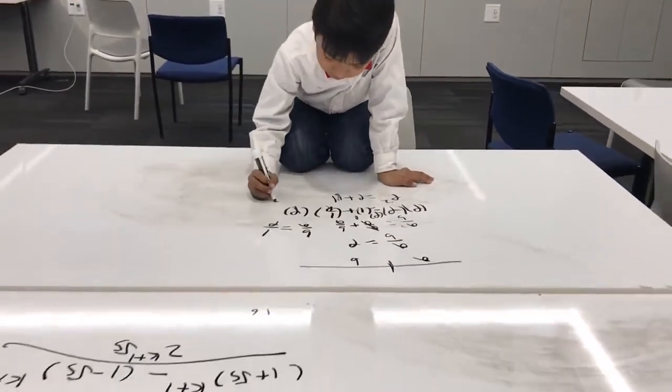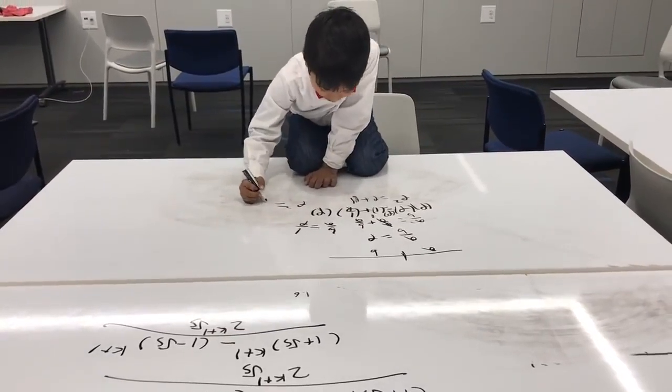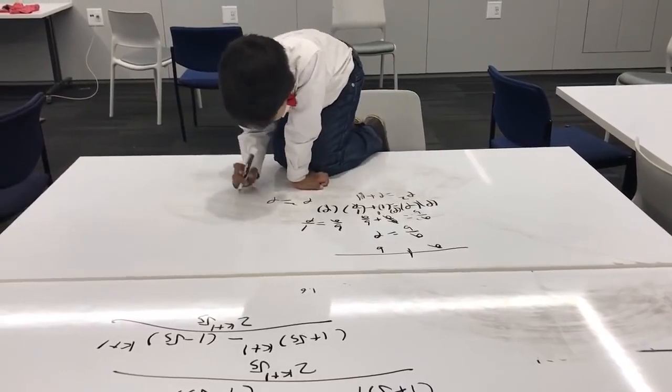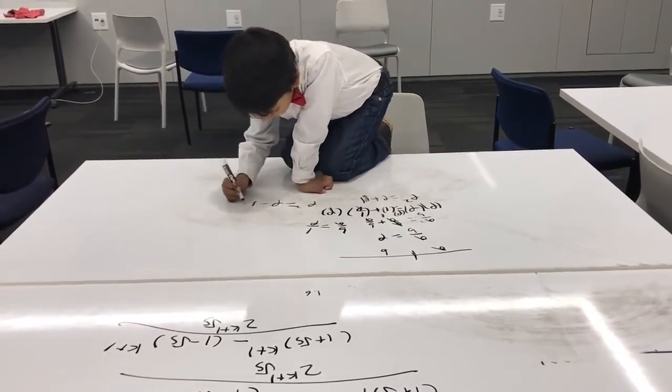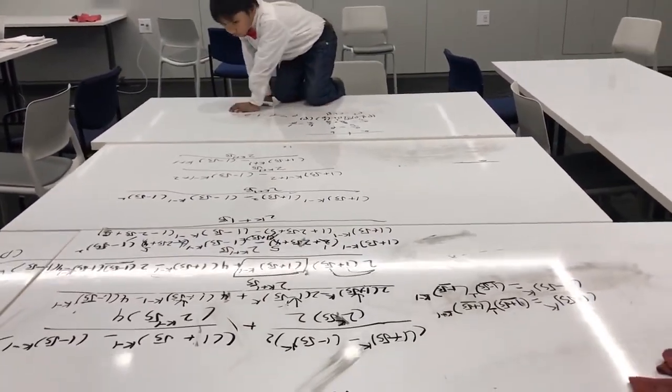So phi squared minus phi. Let's bring everything to the right side, minus 1 equals 0. Now we're gonna do the quadratic formula.